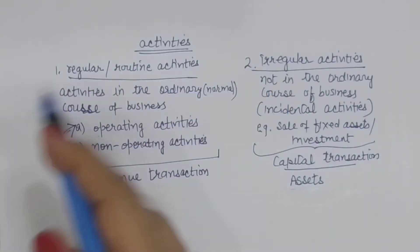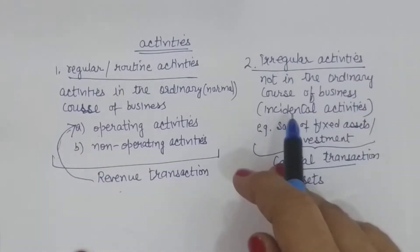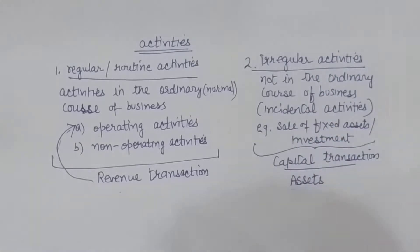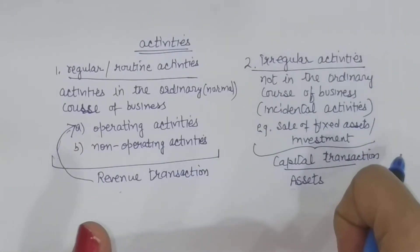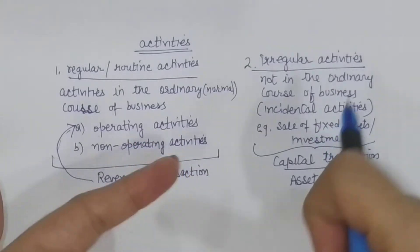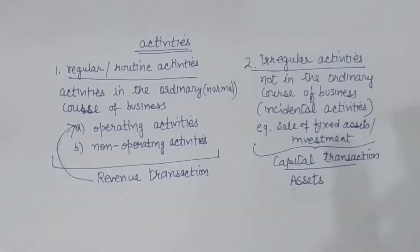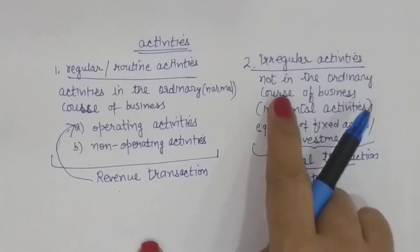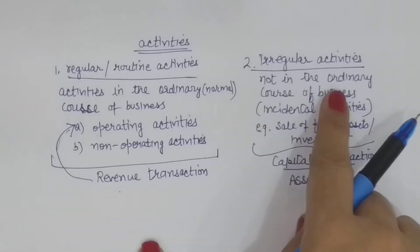Regular matlab jo routine mein chal raha hai. Iske alawa kuch activities hoti hain jo regular nahi hain — irregular hain. These are called incidental activities. Jaise aapke business mein aapne ek building purchase ki aur vahan factory lagayi. Ab aapki zarooraten badh gayi hain, aapko ek badi factory lagani hai, to aap sochte ho ki yeh building bech do aur ek nai building khariedo. So us building ko bechnay ka jo transaction hai, aur uspe jo profit-loss hoga, woh aapka incidental to business hai — business ki requirement ke karan hai. But woh aapke business ka main kaam nahi hai. Isliye isse hum bolte hain irregular activity.